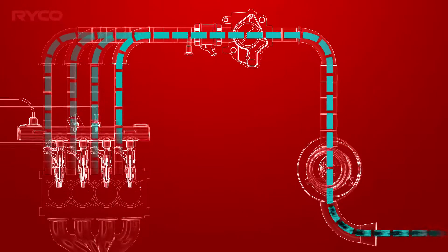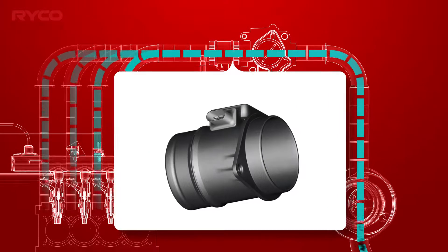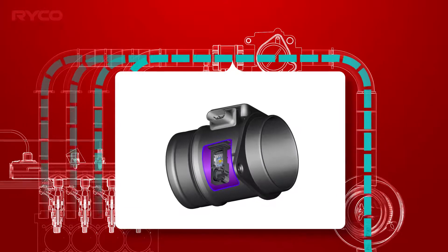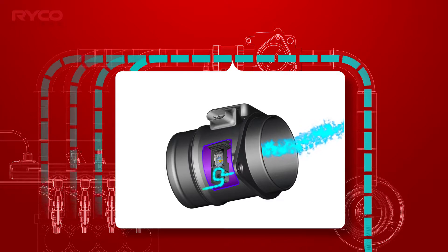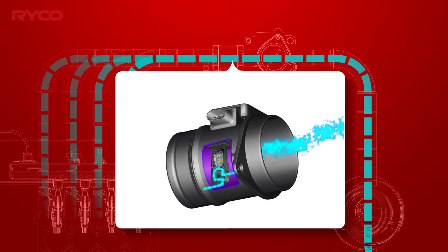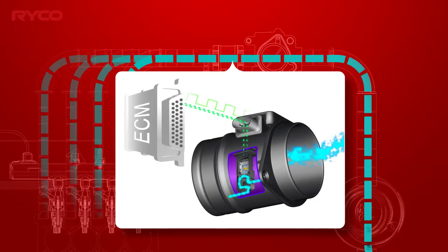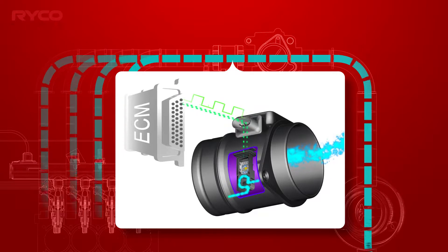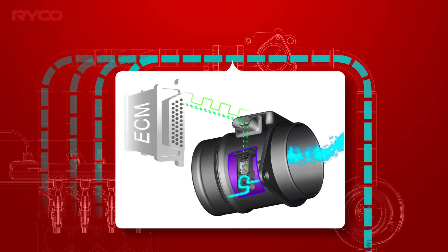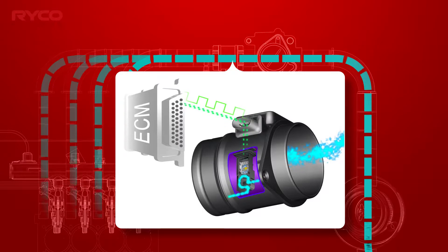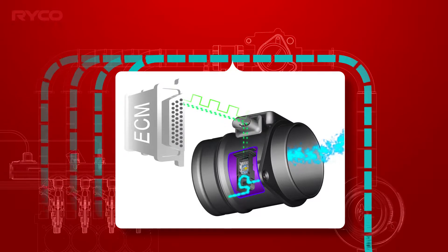Once clean air has passed through the filter, an airflow sensor feeds mass and temperature information to the engine control module. The ECM then calculates the precise amount of fuel required using this and other engine sensor data to achieve correct air fuel ratios for the current operating conditions.